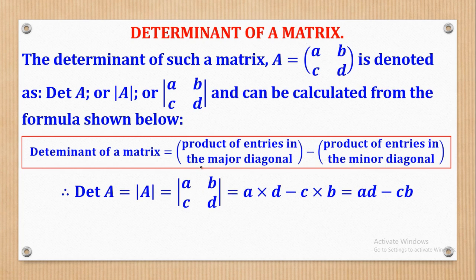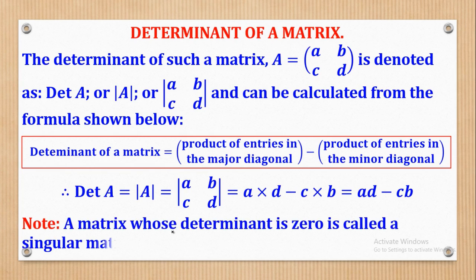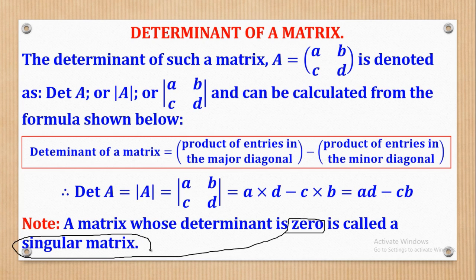That is the formula used to get the Determinant of a Matrix. There is something important to note: if you calculate the Determinant of a Matrix and get 0, that Matrix is given a special name — it is called a Singular Matrix. So each time you see that a Matrix is a Singular Matrix, it implies that its Determinant is equal to 0.